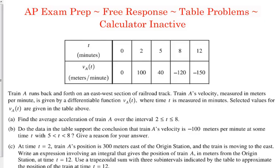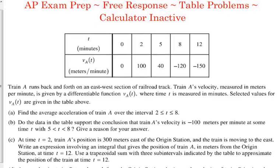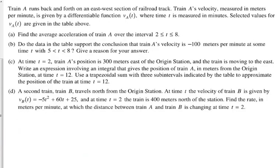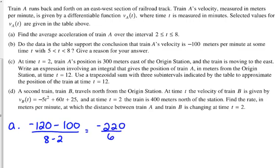Part A asks us for the average acceleration over the interval from 2 to 8. If we've got velocity, how do we find average acceleration? Acceleration is the derivative of velocity, but average acceleration is just going to be the slope over that interval. They're going to give you manageable numbers to do this with. The velocity at time 8 is negative 120, and the velocity at time 2 is 100, and that's over a change of 8 minus 2. That's negative 220 over 6 — you do not have to simplify that.